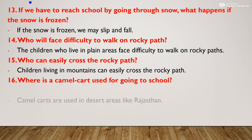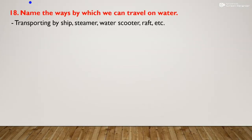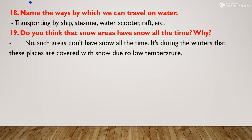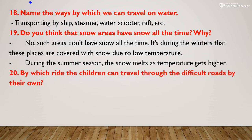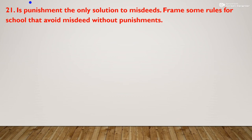Where is a camel cart used for going to school? Camel carts are used in desert areas like Rajasthan. Name some boats: paddle boat, row boat, motor boat, house boat. Name ways to travel on water: steamer, water scooter, raft. Do snow areas have snow all the time? No — during winter these places are covered with snow due to low temperature, but during summer the snow melts as temperature gets higher.